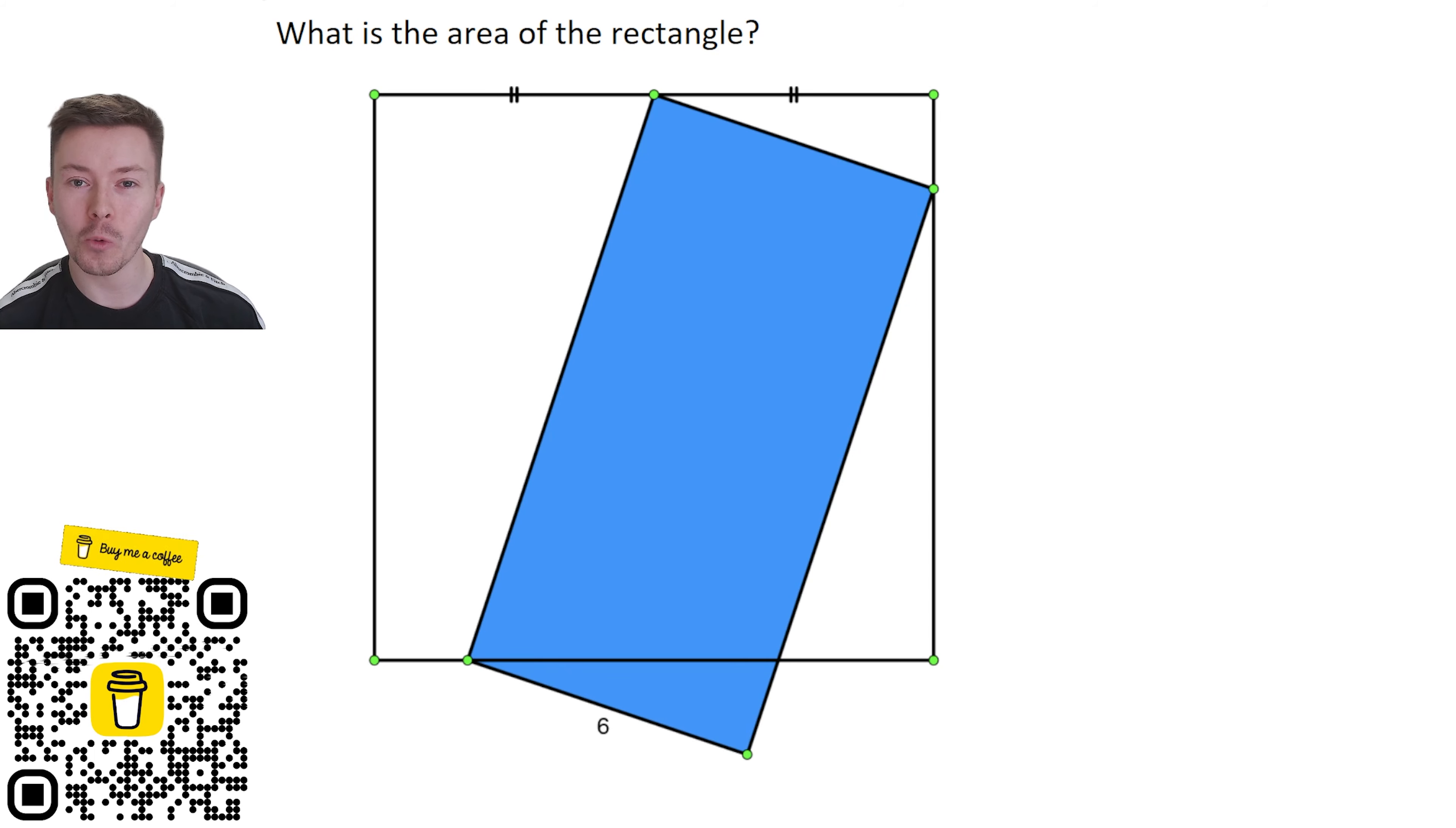So the question this week is what is the area of the rectangle? Now this rectangle has got a width of six and it's inside mostly a square where the top left corner of this rectangle is bisecting the top side of the square.